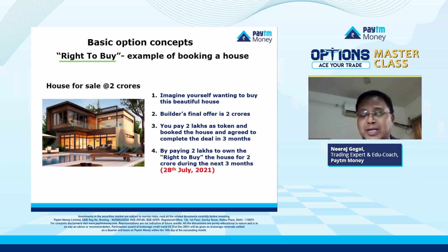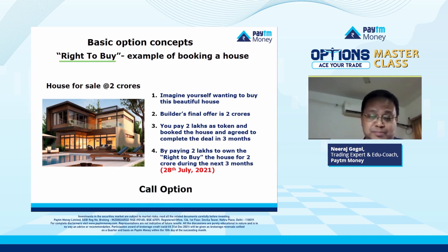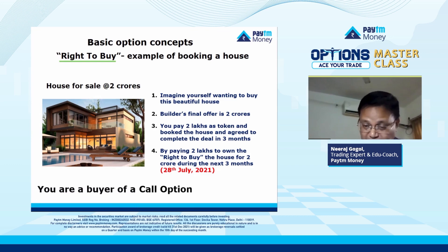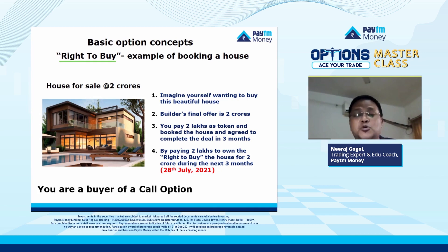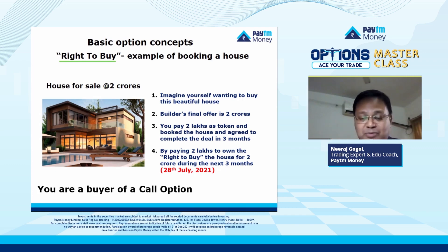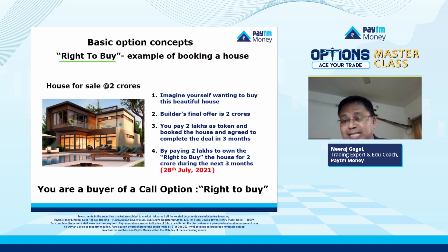This agreement between you and the builder is what is called a call option. This particular contract gives you the right to buy the house at two crore rupees on or before 28th of July 2021. So you are a buyer of this call option. Now let's understand the scenarios.